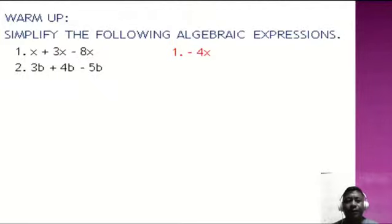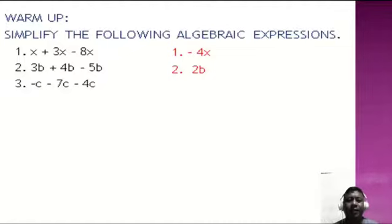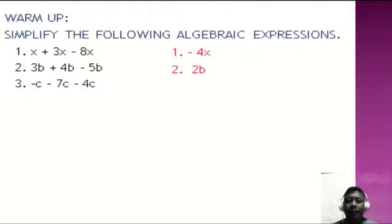Number three: negative c minus 7c minus 4c. Take note: negative c has a numerical coefficient of negative 1. So we have negative 1 plus negative 7 is negative 8, plus negative 4 is negative 12. Copy the variable c, so we have negative 12c.